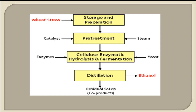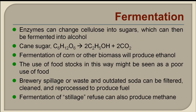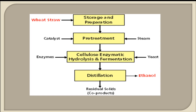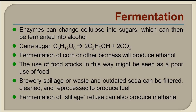After fermentation, the material undergoes distillation and we get ethanol as the end product, along with some residual solids as byproducts. Enzymes change the cellulose into sugars, which are then fermented into alcohol — ethyl alcohol or ethanol. From cane sugar (C₆H₁₂O₆), the reaction produces ethyl alcohol plus carbon dioxide.